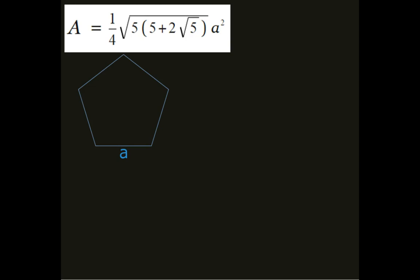Simple enough, you know, I have five sides, so apply a square times 1 divided by 4 is square root of 5, 5 plus 2 times square root of 5. All right.